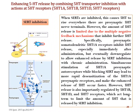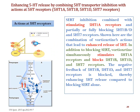Vortioxetine blocks the SERT and also acts on 5-HT autoreceptors — specifically 5-HT1A, 1B, 1D, and 5-HT7. The transporter blocks the reuptake, and the action at the autoreceptor blocks the negative feedback to the pre-synapse. In the long term, the effect is sustained with vortioxetine.